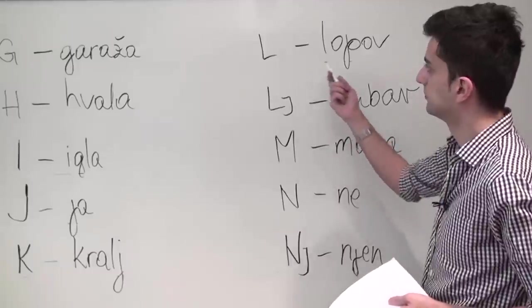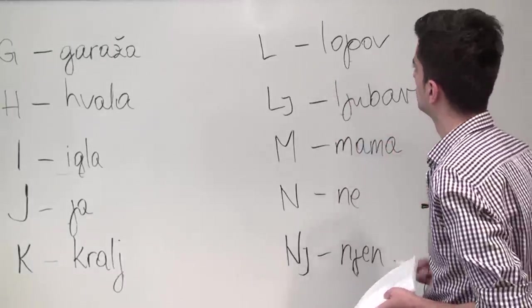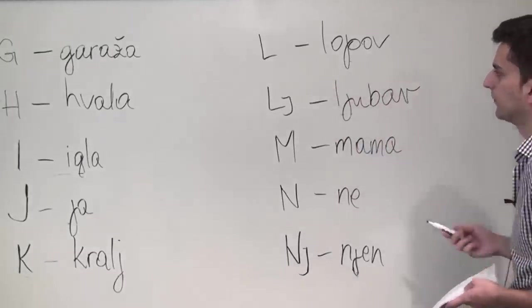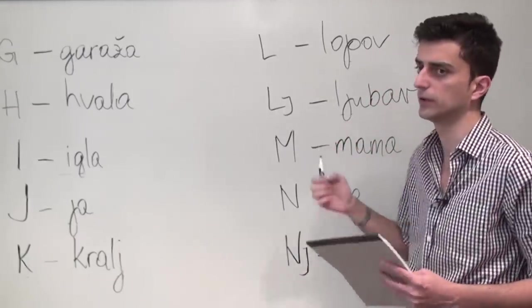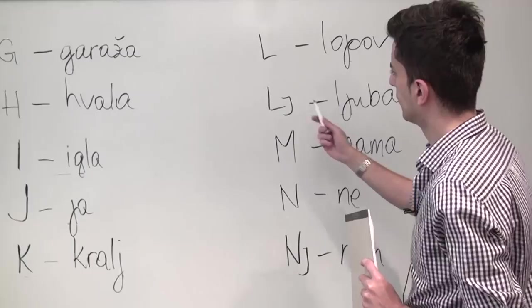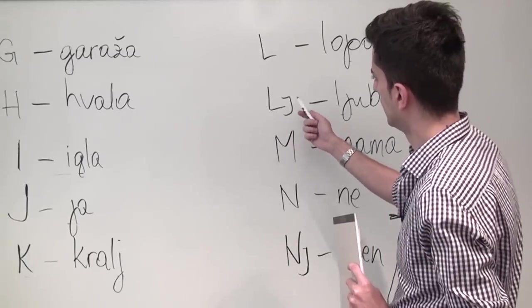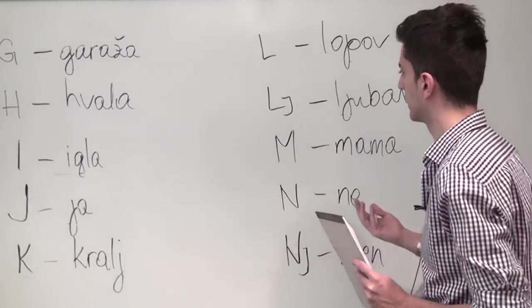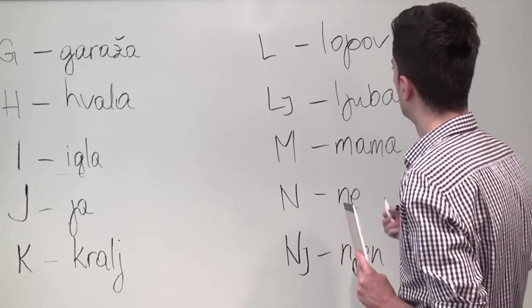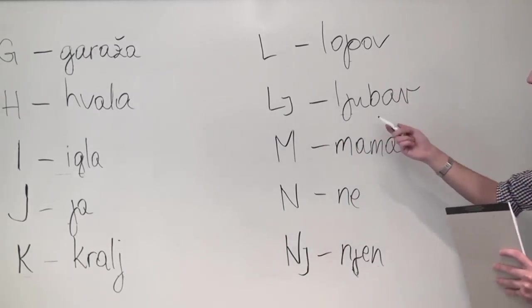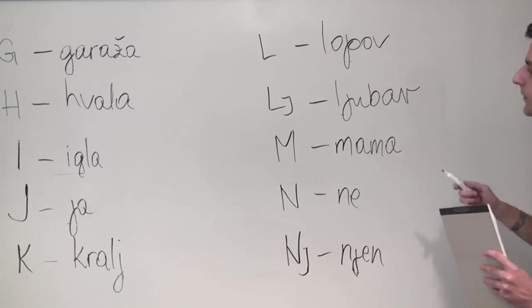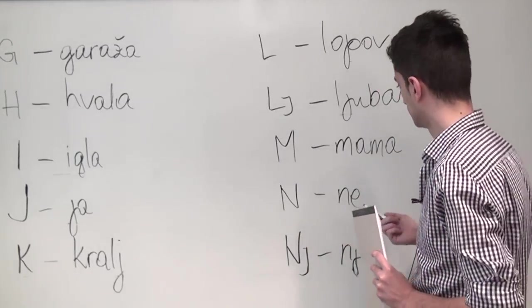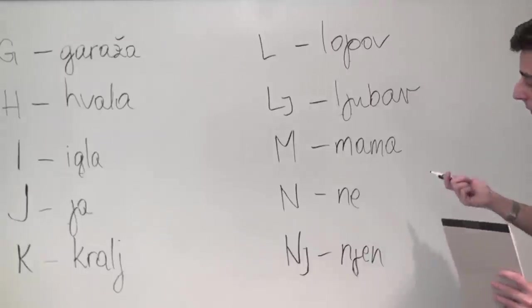Letter L is pronounced L, so it can be heard in the word lopov. Now Lj is our second compound letter. It's a combination of letters L and J, but like I said before it's one letter, it represents one sound, so treat it like that. You can hear it in the word ljubav meaning love. Letter M is pronounced M, as in the word mama meaning mom.